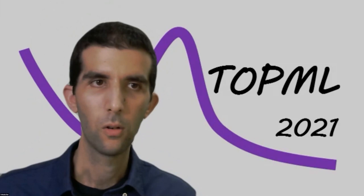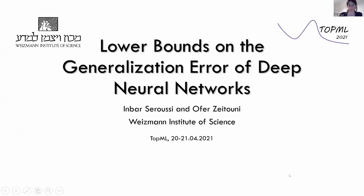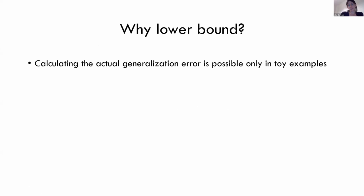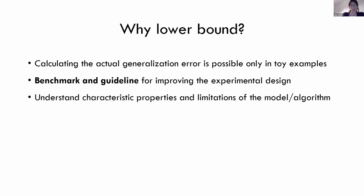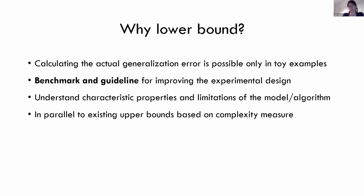The next talk is by Inbar Sarusi from Weizmann Institute. Our work proposes a lower bound on the generalization error for a nonlinear model, going beyond random features and linear models. This is joint work with Ophel Zeytouni from Weizmann Institute. The motivation: calculating the generalization error is only possible in a few examples. A lower bound can provide guidelines and benchmarks to improve design, and we can understand characteristic properties and limitations of the model.